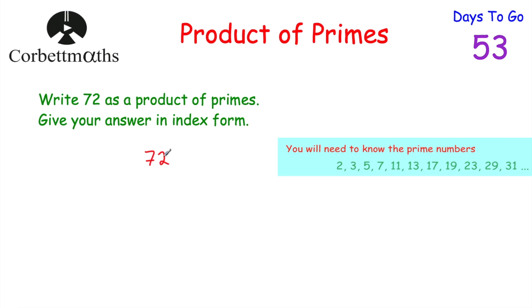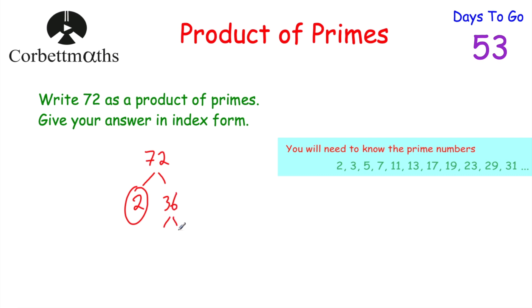I start off with the number 72, and I think of two numbers that multiply together to give me 72. You could choose 9 times 8, or 2 times 36. I'm going to choose 2 times 36. Now 2 is prime, so we circle it, whereas 36 isn't prime, so we're going to carry on. We do two more branches, and think of two numbers that multiply together to give us 36. I'm going to choose 3 times 12 — you could do 2 times 18, or 4 times 9.